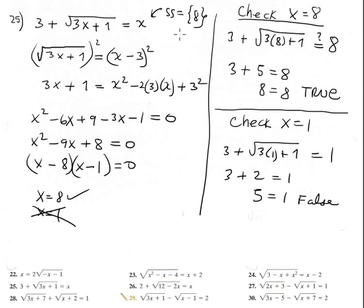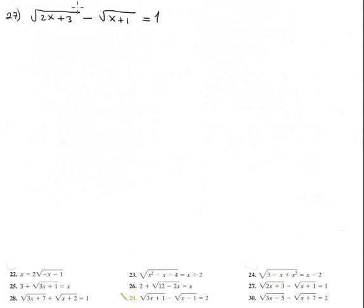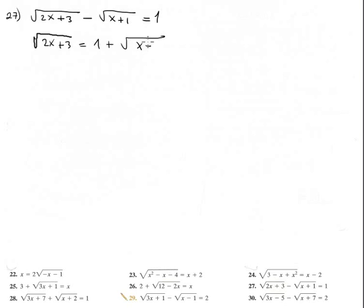Next problem: a radical equation containing two radicals. Copy the equation, isolate the first radical. We have the square root of 2x plus 3 equals 1 plus the square root of x plus 1, then square both sides.